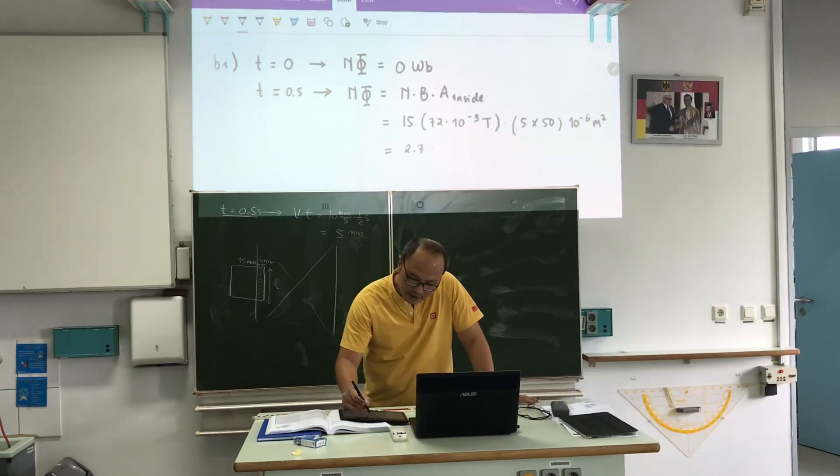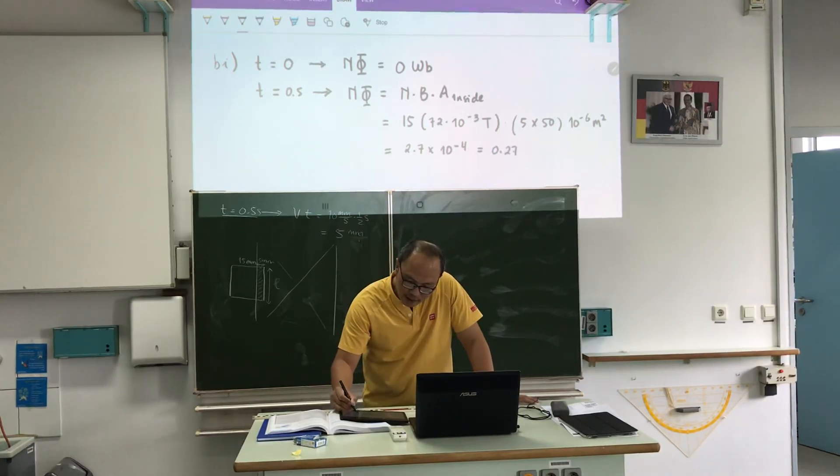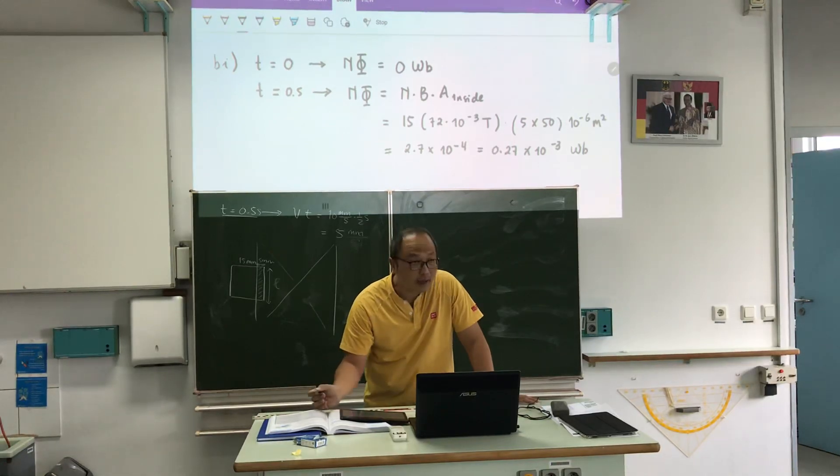Or can I say 0.27 times 10 to the power of minus 3. Remember? Yeah. You can write.